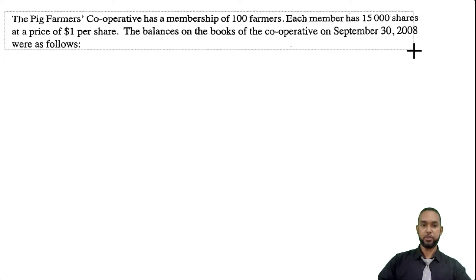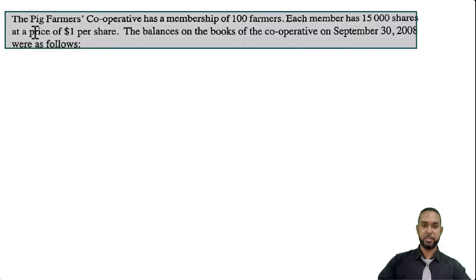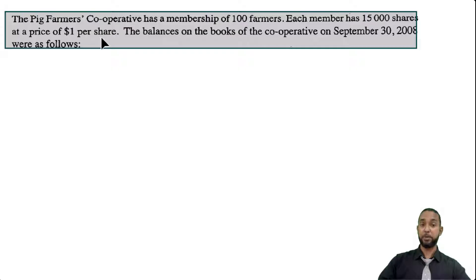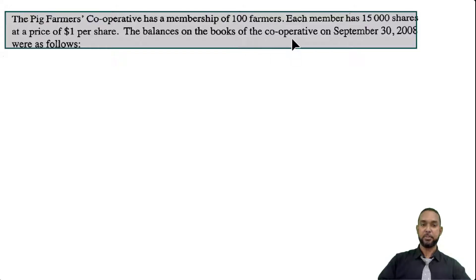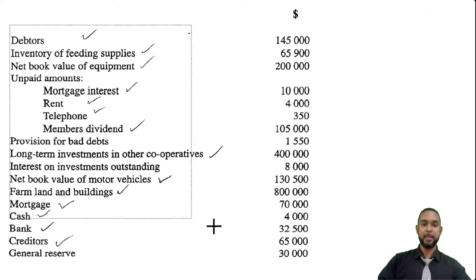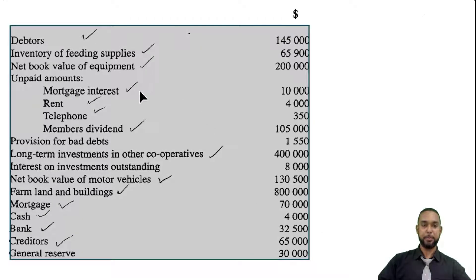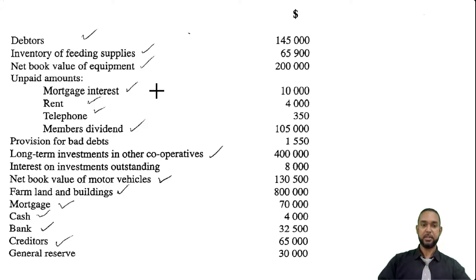So it's a cooperative's question, but they're asking us to do a balance sheet. The Pig Farmers Cooperative has a membership of a hundred farmers. Each member has 15,000 shares at a price of a dollar per share — remember that, it's going to come in handy later. The balances on the books of the cooperative on September 30th were as follows. I do apologize, but somebody clearly ticked up on my paper, and that's what I have right now. So we have a bunch of things here.